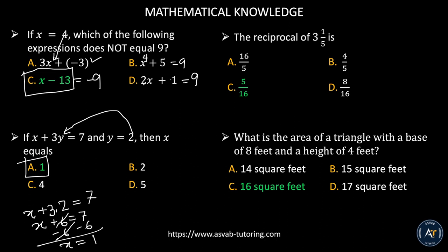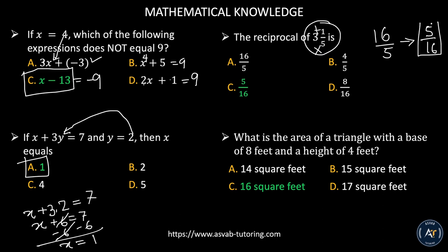What is the reciprocal of 3 and 1 fifth? First, convert the mixed number to an improper fraction: 3 times 5 is 15, plus 1 is 16, so it becomes 16 over 5. The reciprocal means you flip it, so that gives you 5 over 16. The correct answer is letter C.